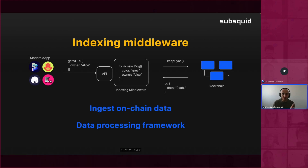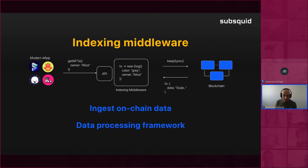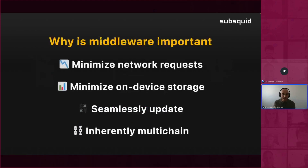It's also very useful when nodes don't offer the exact data you need, or when you need it in a different form requiring additional computation. This is why indexing is necessary. For example: what NFTs does Alice own? I know Alice's on-chain address, but I don't know all the NFTs she owns — to find out I'd have to scour the entire blockchain. This is exactly what indexing middleware handles.